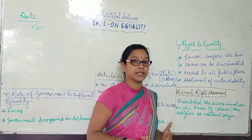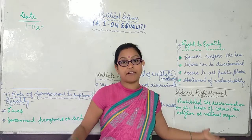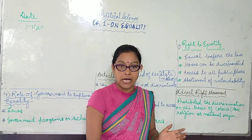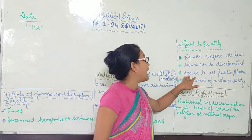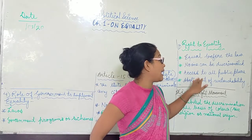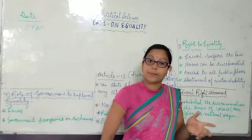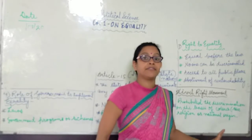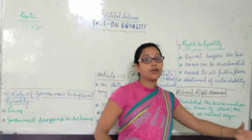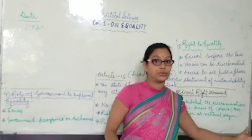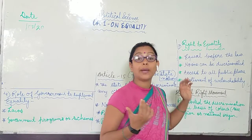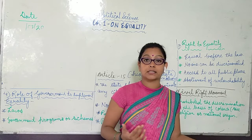The second right is that no one can be discriminated against. We cannot discriminate any person on the basis of the factors we discussed — colour, religion, caste, gender, or education. The third right is access to all public places. All citizens of a democratic country have the right to access and use public places and public property. For example, every citizen is allowed to enter a mall. No one can say you are not well dressed or your clothes are not clean, so you cannot enter — because the government gives every citizen the right to access public places like parks, malls, shopping complexes, amusement parks, markets, and temples.